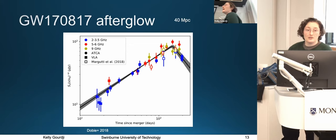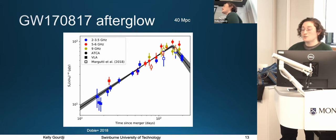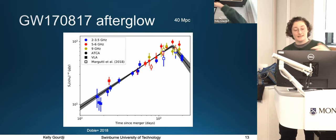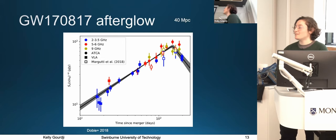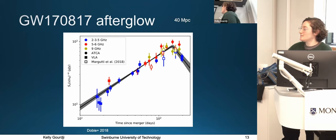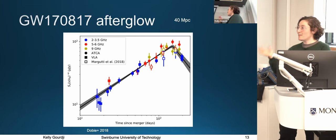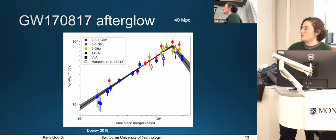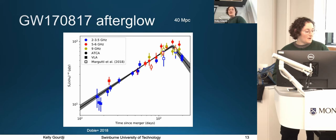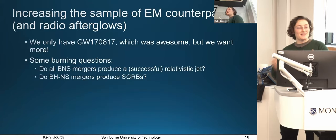For that single event, we were able to gain an understanding of the system's orientation. This helped break a degeneracy in our constraints on H₀, because there's a distance-inclination degeneracy in the gravitational wave analysis of H₀. So this allowed us to get a better understanding of the viewing geometry of the system. GW170817 was very interesting from the radio perspective, but there are lots of other reasons why gravitational wave merger event counterparts are interesting.